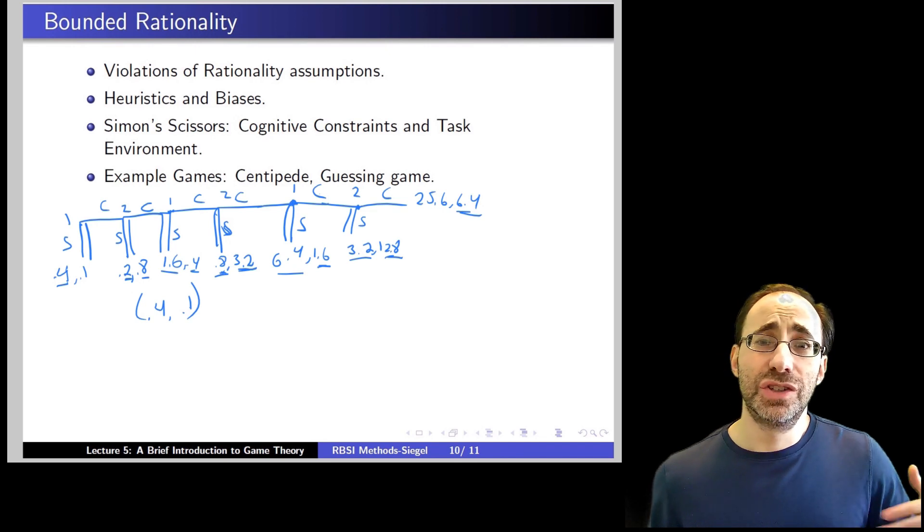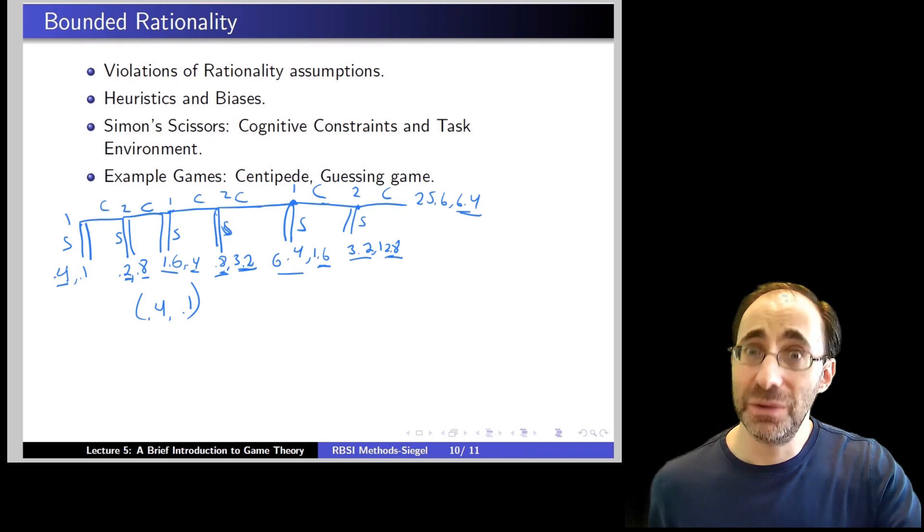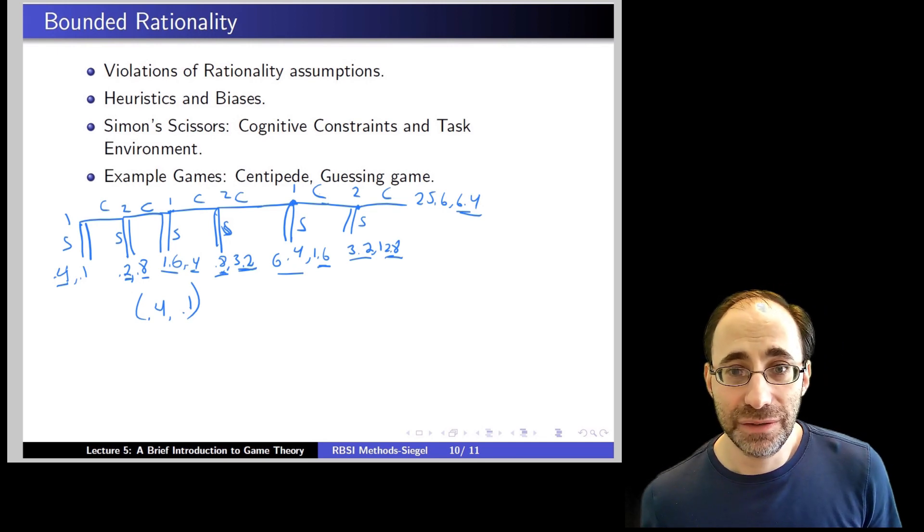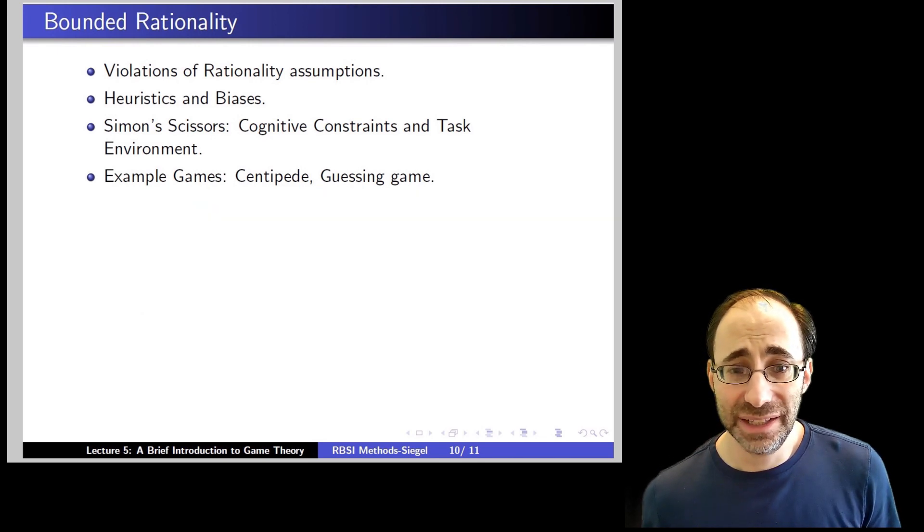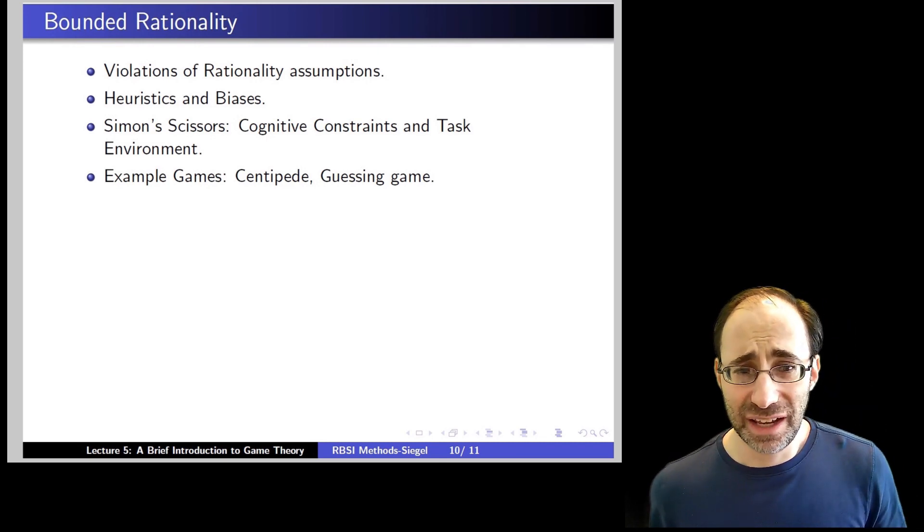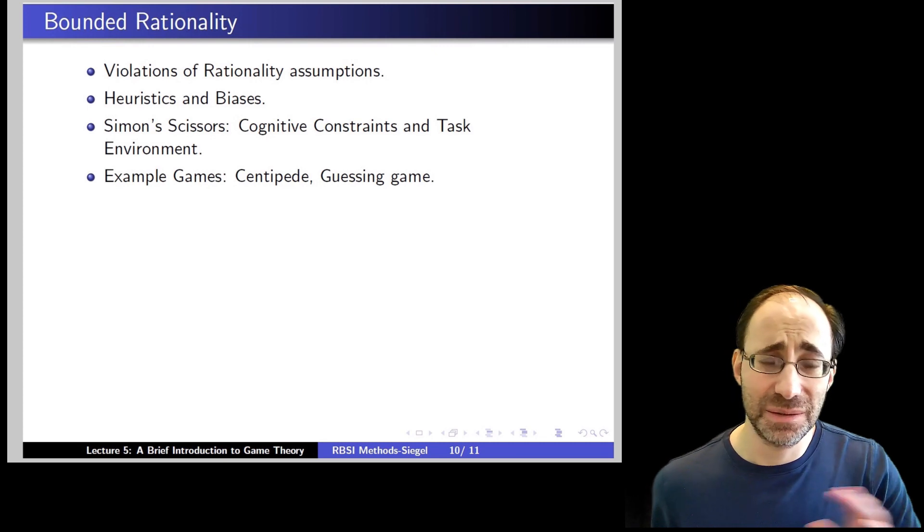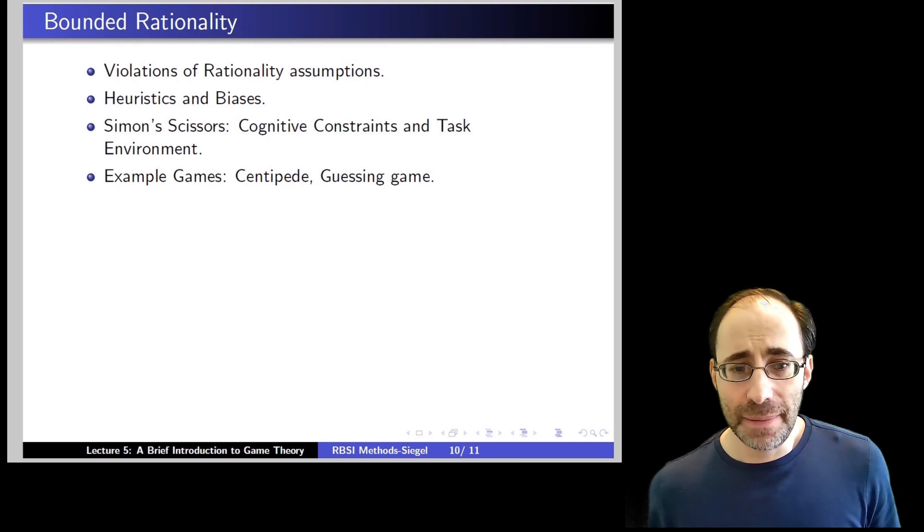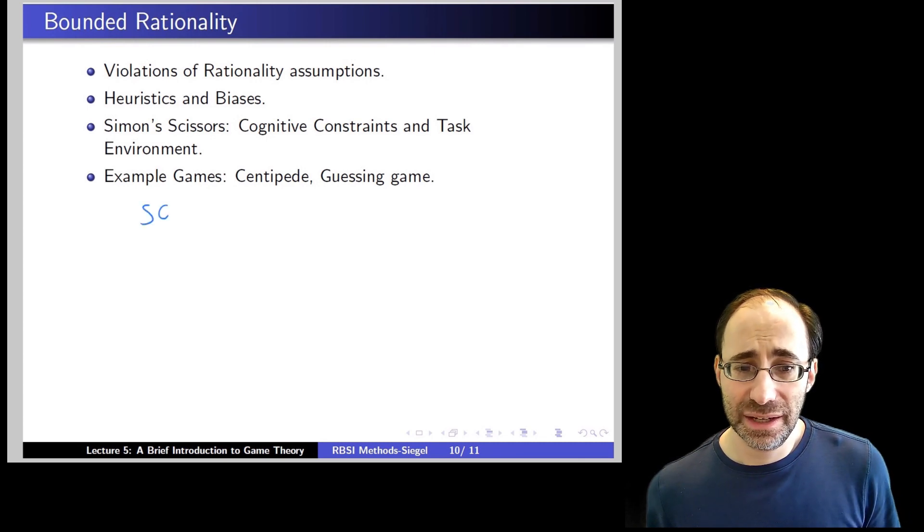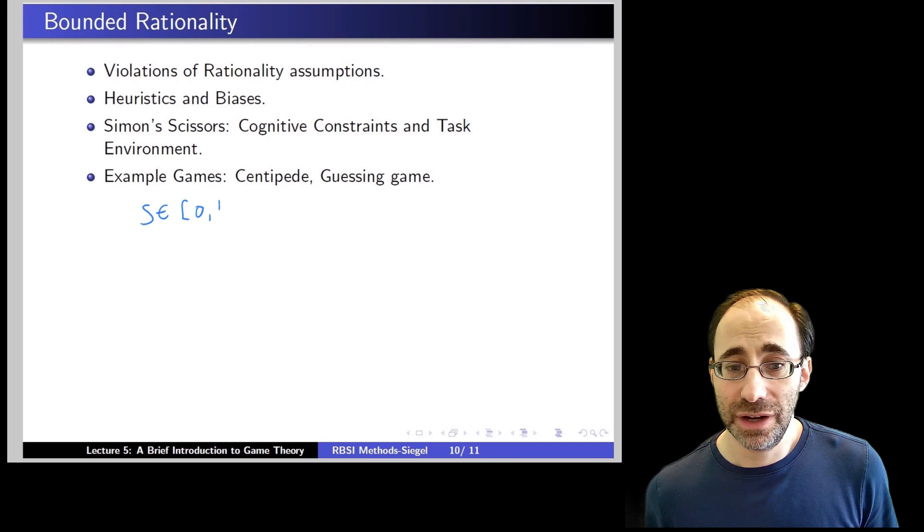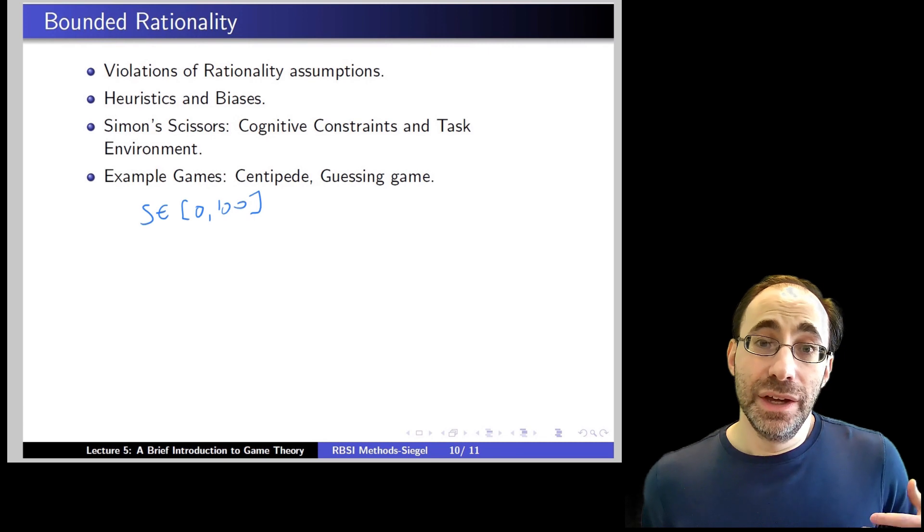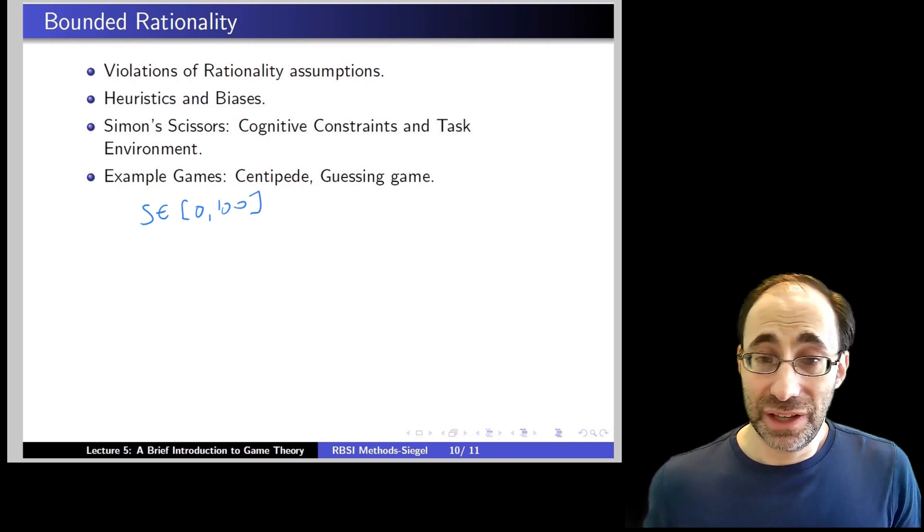So that's one example and it's individuals choose not to use backward induction optimally and instead just kind of go for it. A second example I want to mention briefly, I want to call it a guessing game. It's also called a beauty pageant game or a Keynesian beauty pageant game. There are a lot of varieties of this game. I'm using guessing game here and the idea is this. Each individual has a choice to guess between 0 and 100 inclusive. You have to use whole numbers or integers here, not fractions.